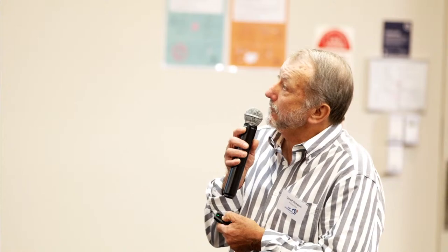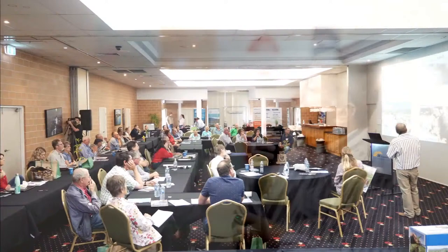The gully growth mechanism here is how a waterfall sort of works if you've got dispersable or soft subsoil — you get runoff coming along, it falls over, starts a little swirl, eats that out and then that drops in and it's self-perpetuating, just keeps running backwards. That's an example up here where it's done it. It can really pick you bad if you've got that dispersable subsoil.